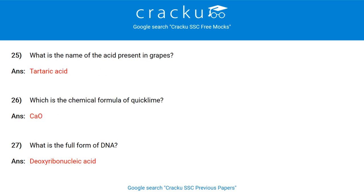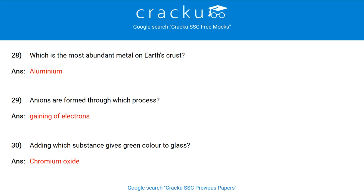What is the name of the acid present in grapes? Tartaric acid. Which is the chemical formula of quick lime? CaO, calcium oxide. What is the full form of DNA? Deoxyribonucleic acid. Which is the most abundant metal in Earth's crust? Aluminium. Anions are formed through which process? By gaining of electrons. Adding which substance gives green colour to glass? Chromium oxide.